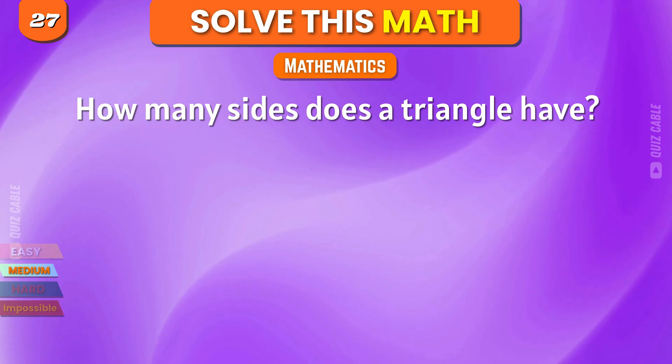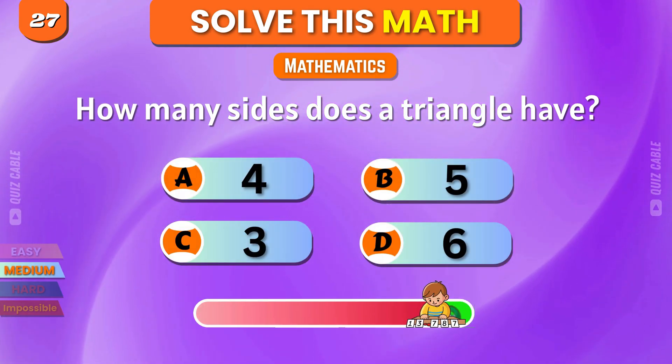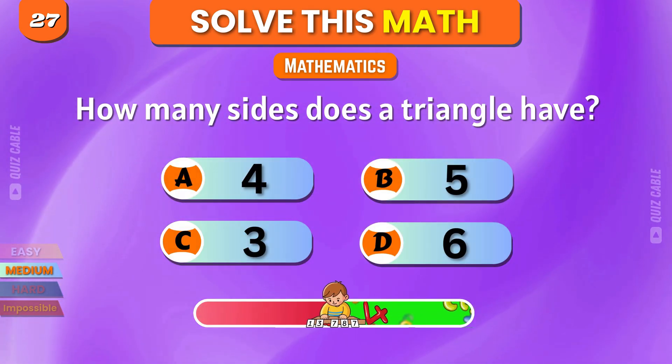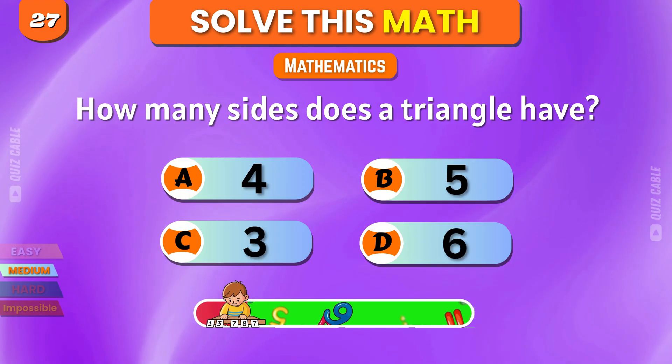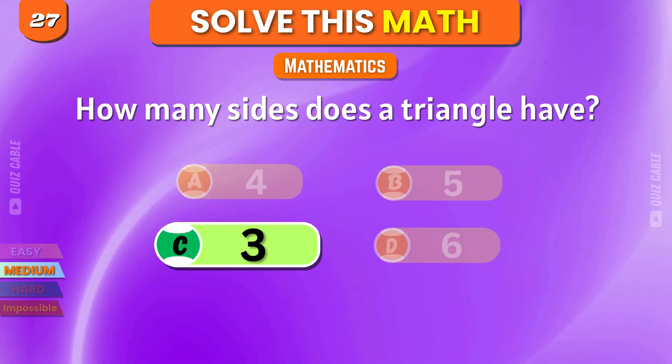How many sides does a triangle have? 4, 5, 3, 6. Yes, 3.